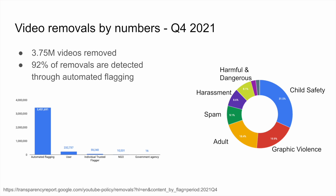Let's start with some numbers. In Q4 of 2021, we removed 3.75 million videos due to community guideline violations. You can see the breakdown of removed content by community guideline vertical on the right. The largest violations in terms of video volume happened in the child safety vertical, followed by graphic violence and adult. About 92% of these removals were detected through automated flagging by our algorithms.